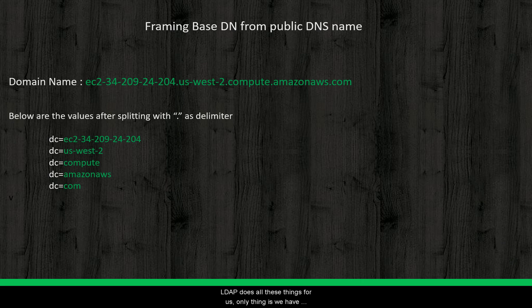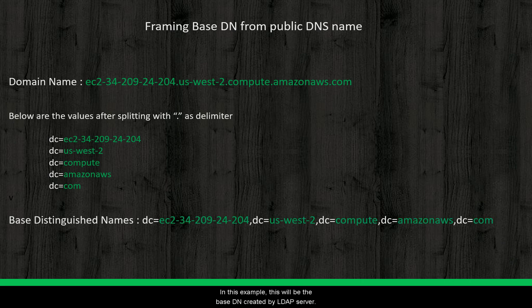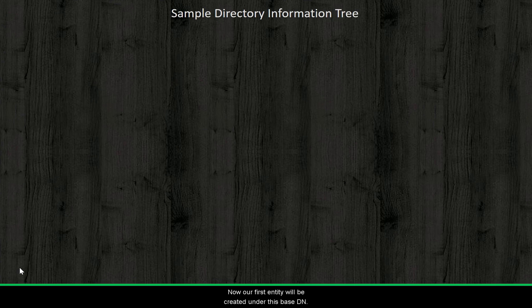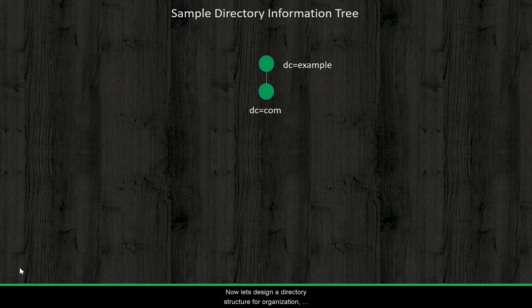The only thing we have to provide is the public DNS name. In this example, this will be the base DN created by the LDAP server. Now our first entity will be created under this base DN. For simplicity, let's consider example.com as our DNS name. LDAP will split it and the entity will be created like this.